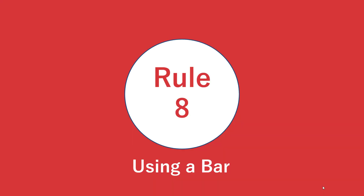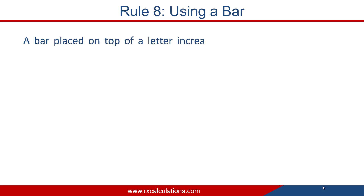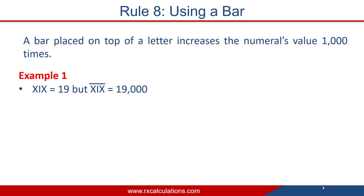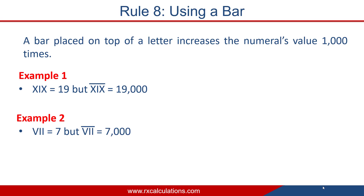Rule number 8: using a bar. A bar placed on top of a letter increases the numeral's value 1000 times. For example, XIX = 19, but with a bar on top of XIX, you have 19,000. Similarly, VII = 7, but with a bar on top of VII, you have 7,000. Placing a bar on top of a Roman numeral increases its value 1000 times.